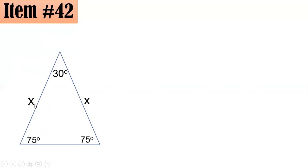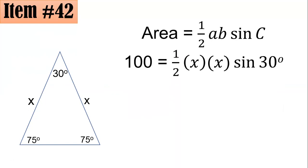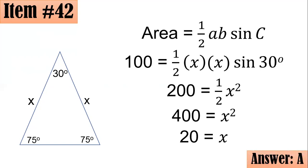And you have here two sides and an included angle. But if you have two sides and an included angle, you could actually use the formula area equals one half AB sine C, where A and B are the two sides and C is the included angle. So by substitution, the area is 100 equals one half times x times x times sine 30 degrees. Multiplying both sides by two, I have 200 equals x squared. Sine 30 is one half, so multiplying by two again will give 400 equals x squared. And principal square root of both sides yields x equals 20. Hence, letter A is the correct answer.